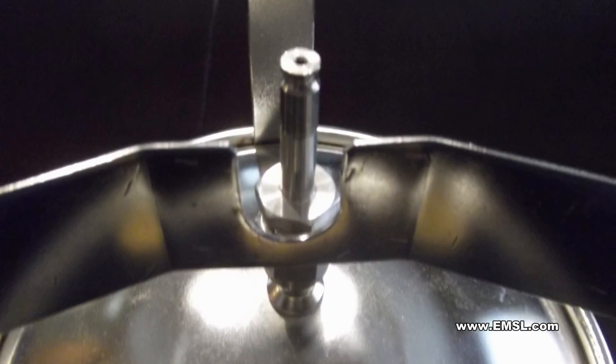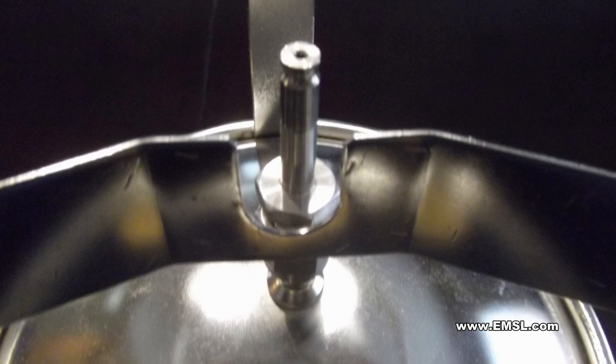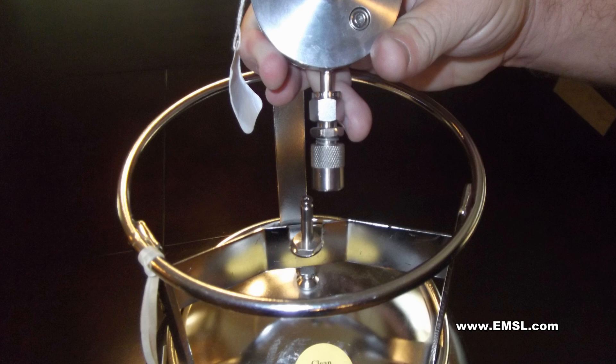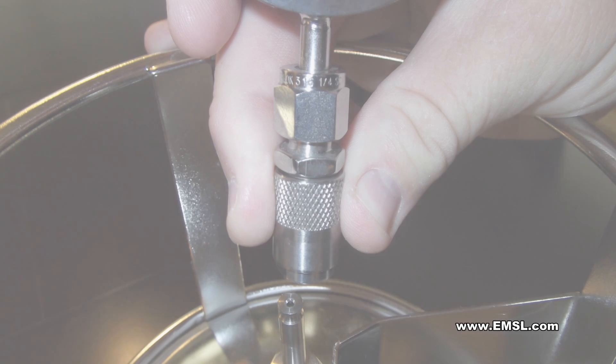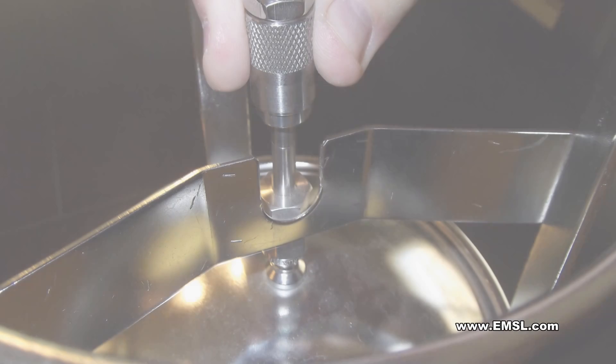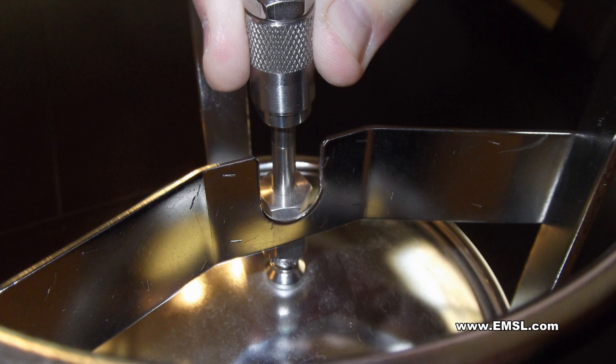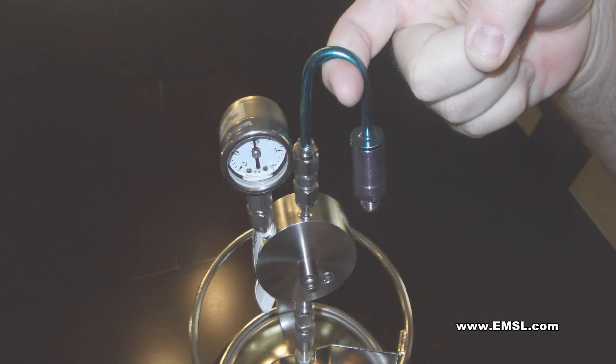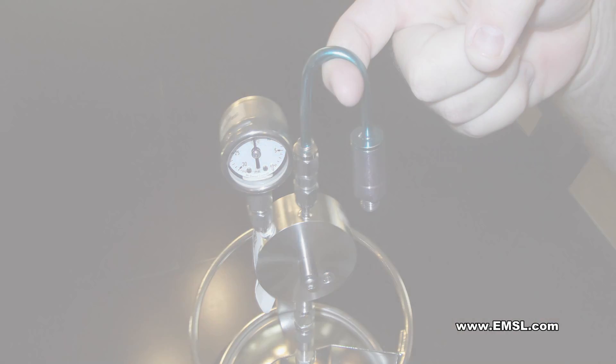Now attach the regulator to the canister by aligning the male QT valve stem, which is on the can, with the female QT valve body on the regulator. Pull back the sleeve on the QT valve and insert the stem onto the body on the canister. Release the sleeve and ensure that it returns to its normal position. Gently tug on the regulator to make sure the two parts are attached securely.